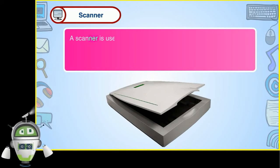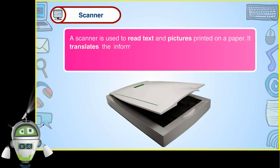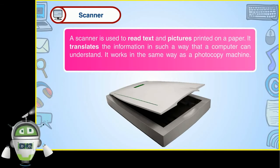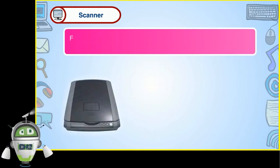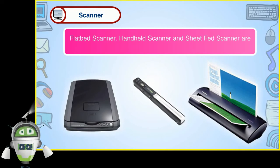Scanner: A scanner is used to read text and pictures printed on a paper. It translates the information in such a way that a computer can understand. It works in the same way as a photocopy machine. Different types of scanners are available these days: Flat bed scanner, Handheld scanner, and sheet-fed scanner are some of the examples.